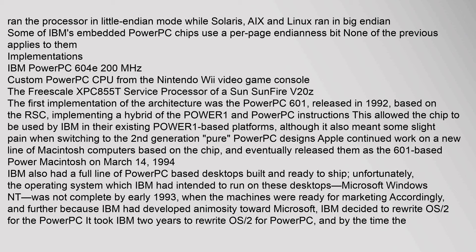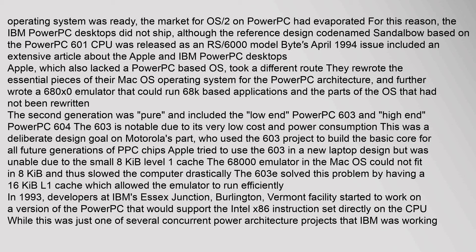IBM also had a full line of PowerPC-based desktops built and ready to ship. Unfortunately, the operating system which IBM had intended to run on these desktops — Microsoft Windows NT — was not complete by early 1993 when the machines were ready. IBM, having developed animosity toward Microsoft, decided to rewrite OS/2 for the PowerPC. It took IBM two years to rewrite OS/2, and by the time it was ready, the market had evaporated. The IBM PowerPC desktops did not ship, although the reference design codenamed Sandalwood, based on the PowerPC 601 CPU, was released as an RS/6000 model. Apple, which also lacked a PowerPC-based OS, took a different route: they rewrote the essential pieces of their Mac OS for the PowerPC architecture and wrote a 680x0 emulator to run 68k-based applications.